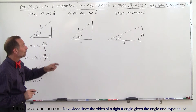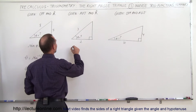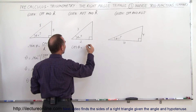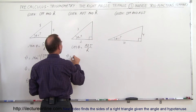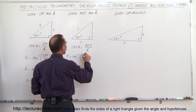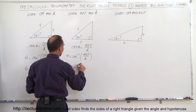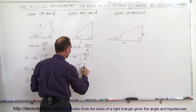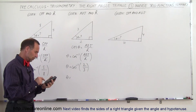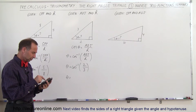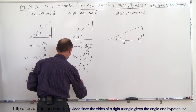In this case you've been given the adjacent side and the hypotenuse, so that's the cosine of theta. By definition, the cosine of theta is the ratio of the adjacent side divided by the hypotenuse, which means the angle can be found by taking the inverse cosine of the adjacent side divided by the hypotenuse. So theta equals the inverse cosine of 2 divided by 3, which gives 48.2 degrees.